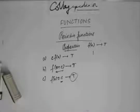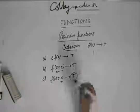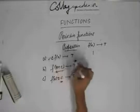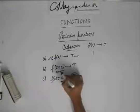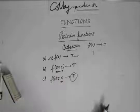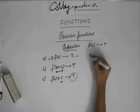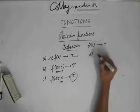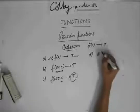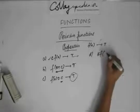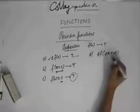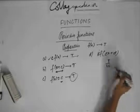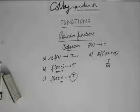We can conclude that if the function is multiplied by a constant, or shifted by a constant, the period remains the same. Now the last property: for a function of the form k·f(cx + d), the period becomes t divided by |c|.